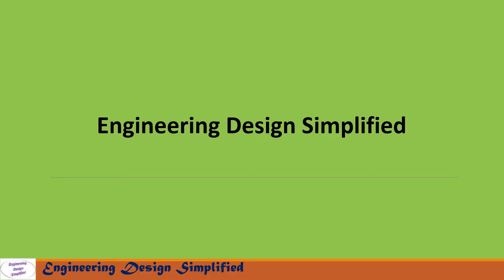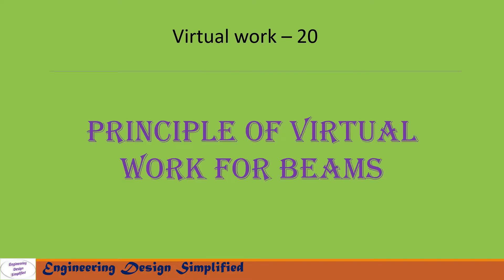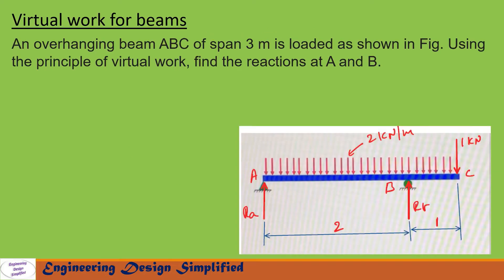Hello engineers, welcome back to Engineering Design Simplified. In this video series I will discuss the Principle of Virtual Work applied for beams. Today's problem is an overhanging beam ABC of span three meters loaded as shown in the figure. Using the Principle of Virtual Work, find the reactions at A and B. The beam has a UDL of 2 kN/m over its entire length and a point load of 1 kN at point C.